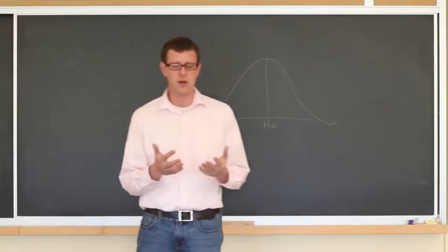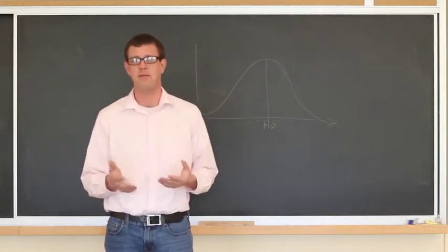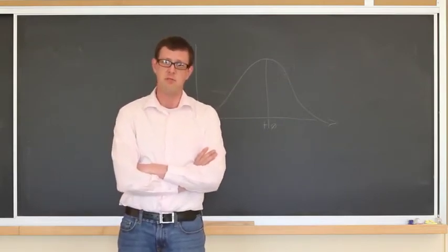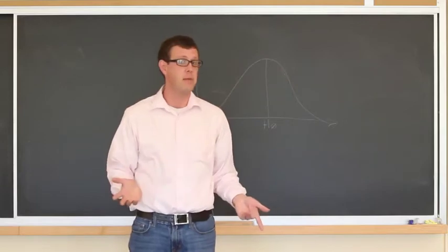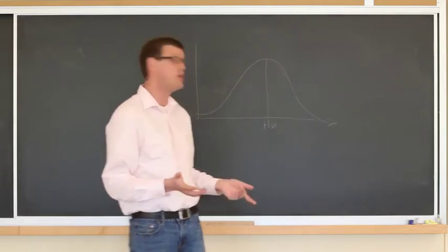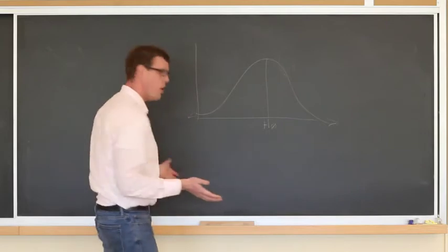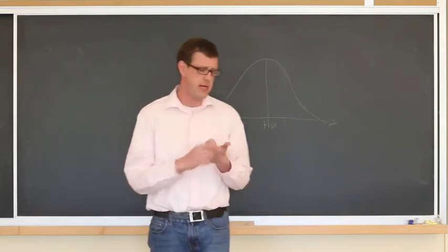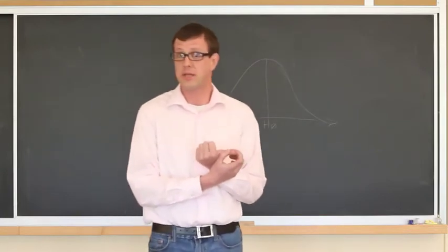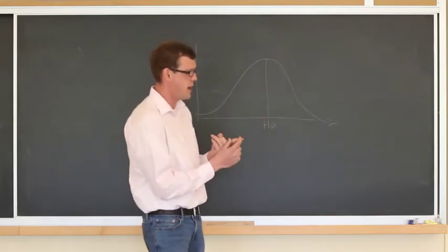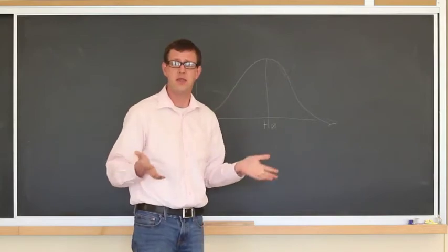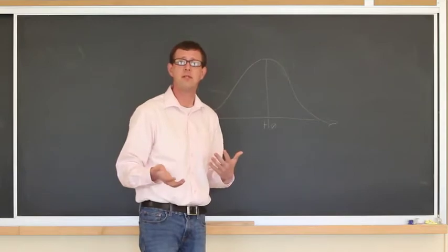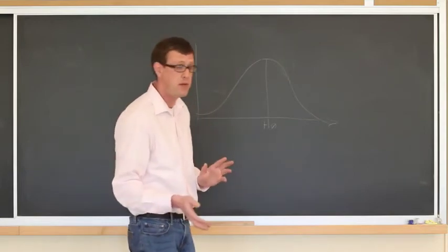One of the things that we need to consider when we're talking about t-tests and any other type of test are the null hypotheses that we're using. One thing that a number of students have brought up has to do with the tails. Under the null hypothesis, we're predicting something. In a one-tailed t-test, we're predicting that the mean of the population is equal to some value. For a two-tailed t-test, typically we're saying that the difference between the means is equal to some value. And for a paired t-test, often we're saying that the mean difference is going to be equal to some value.